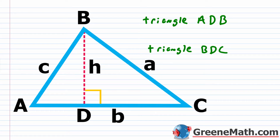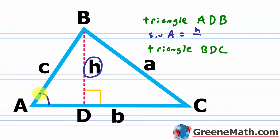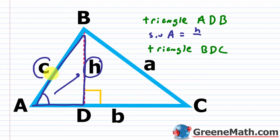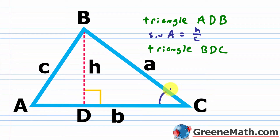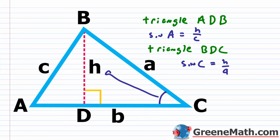Let's think about the sine of angle A. In right triangle ADB, the opposite side is H and the hypotenuse is C, so sine of A equals H over C. Similarly, looking at angle C in triangle BDC, the opposite is H and the hypotenuse is A, so sine of C equals H over A.